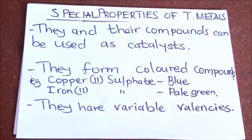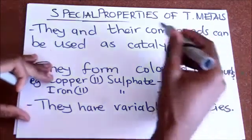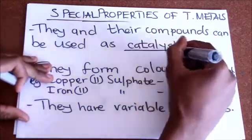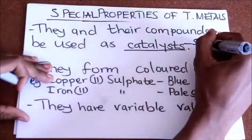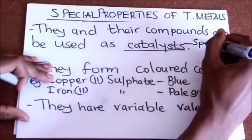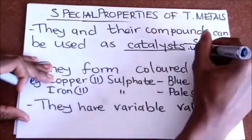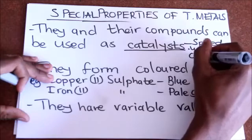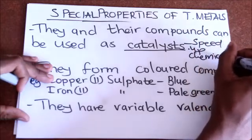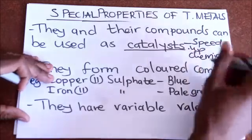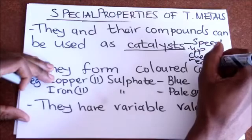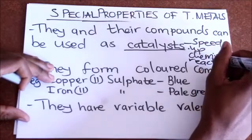If you look at the transition metals, they and their compounds can be used as catalysts. Catalysts speed up chemical reactions. So most transition metals can be used to speed up chemical reactions.